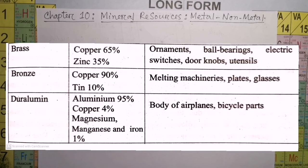Duralumin: Aluminium 95%, Copper 4%, Magnesium, Manganese, and Iron 1%. Body of airplanes and bicycle parts.